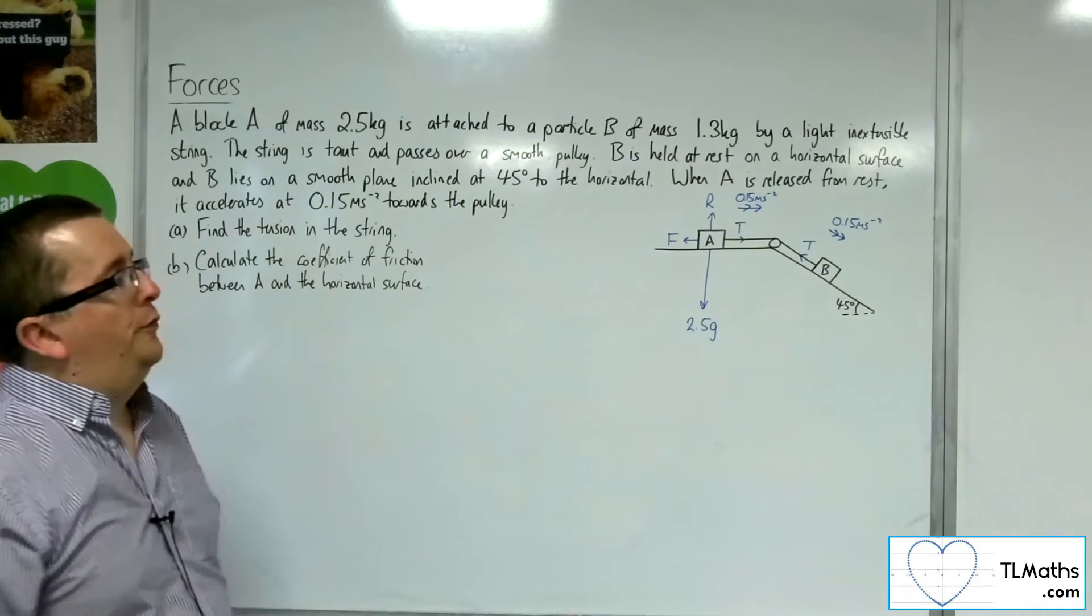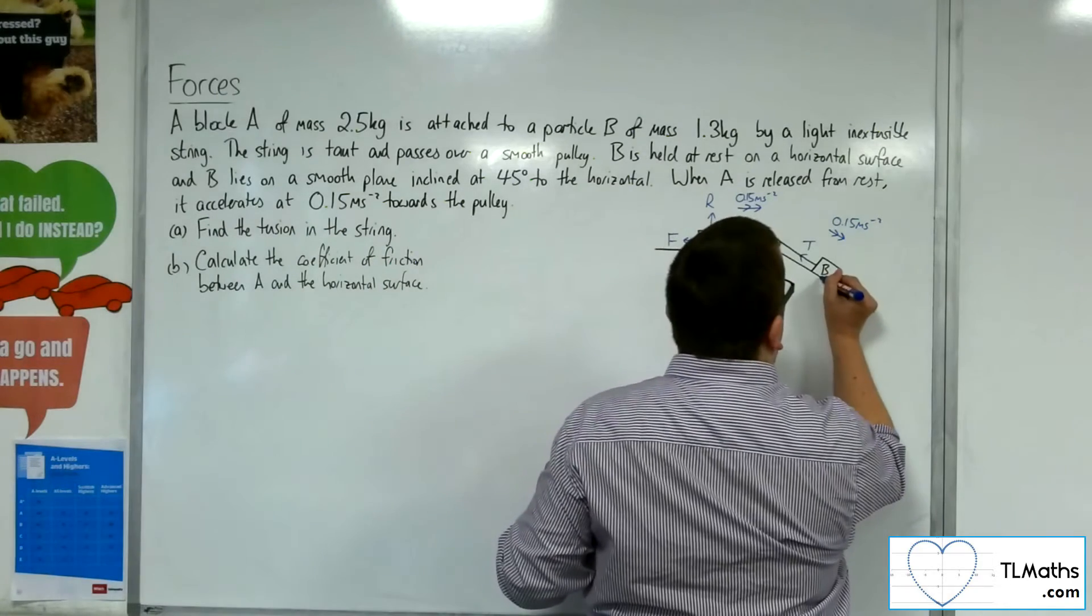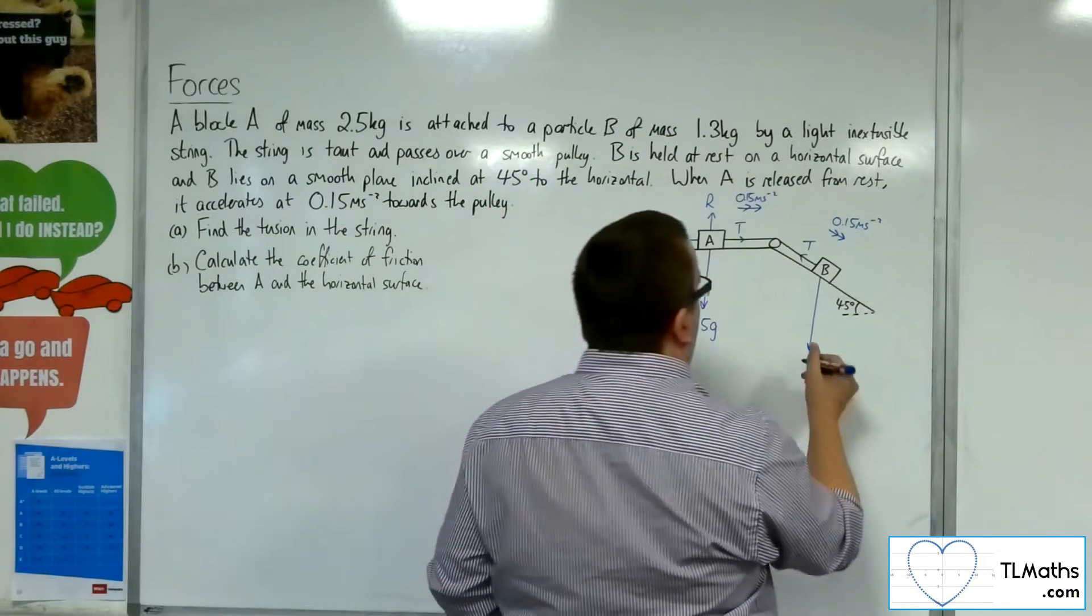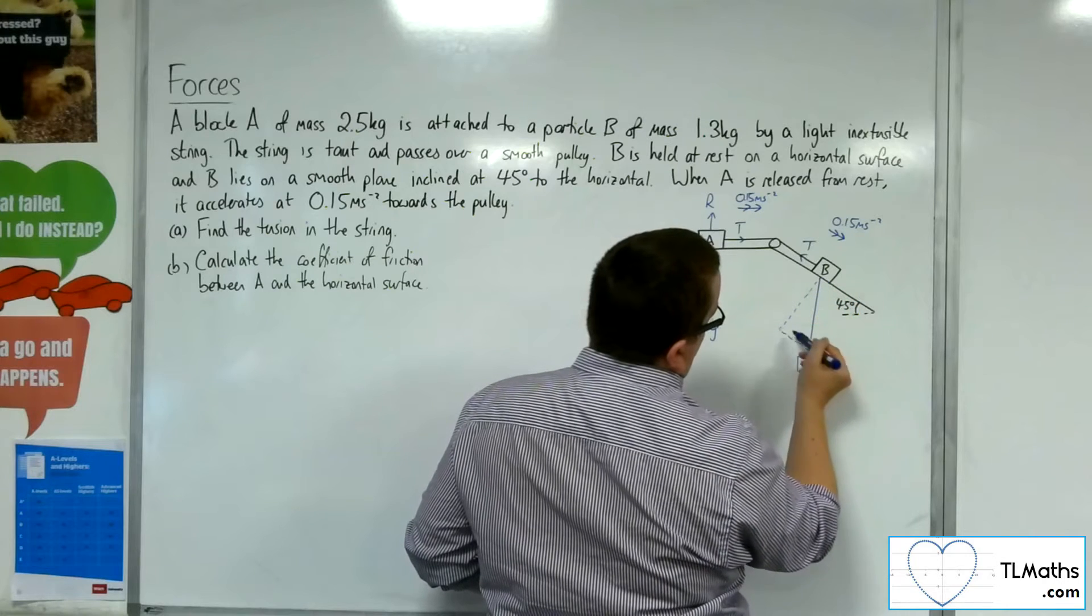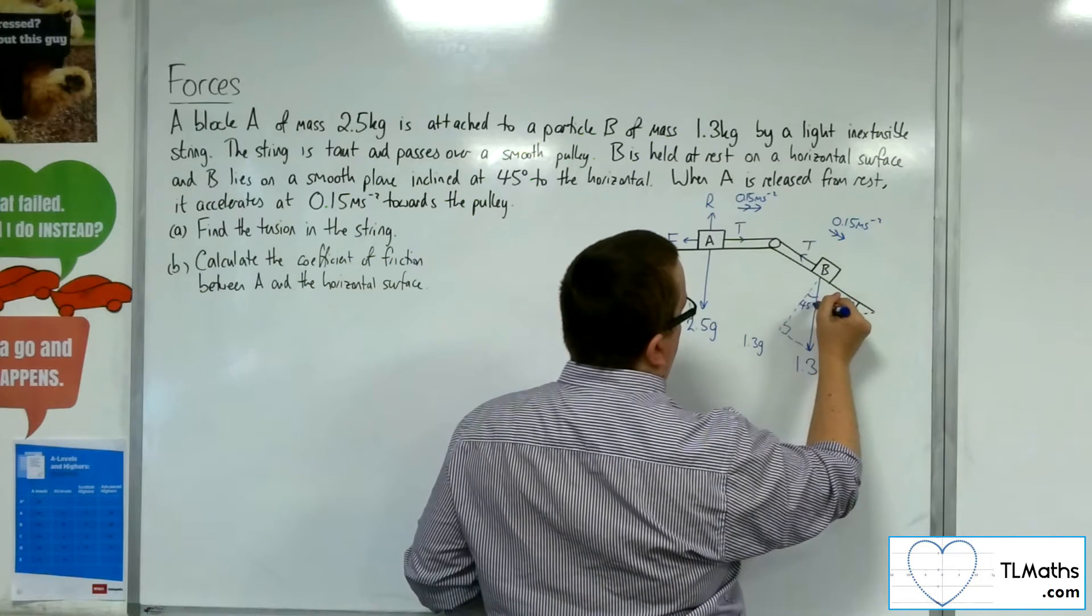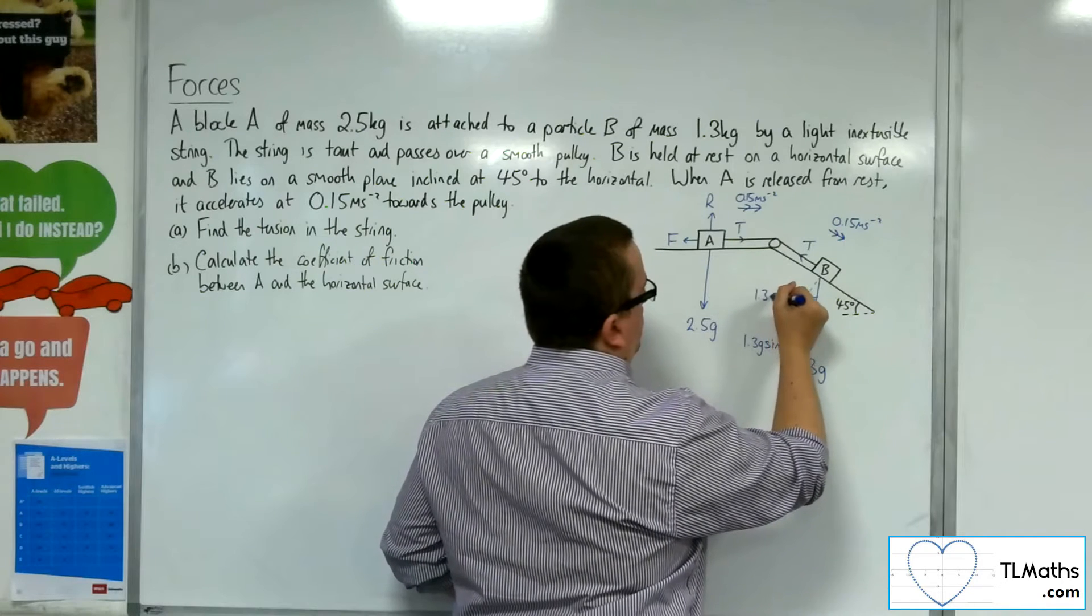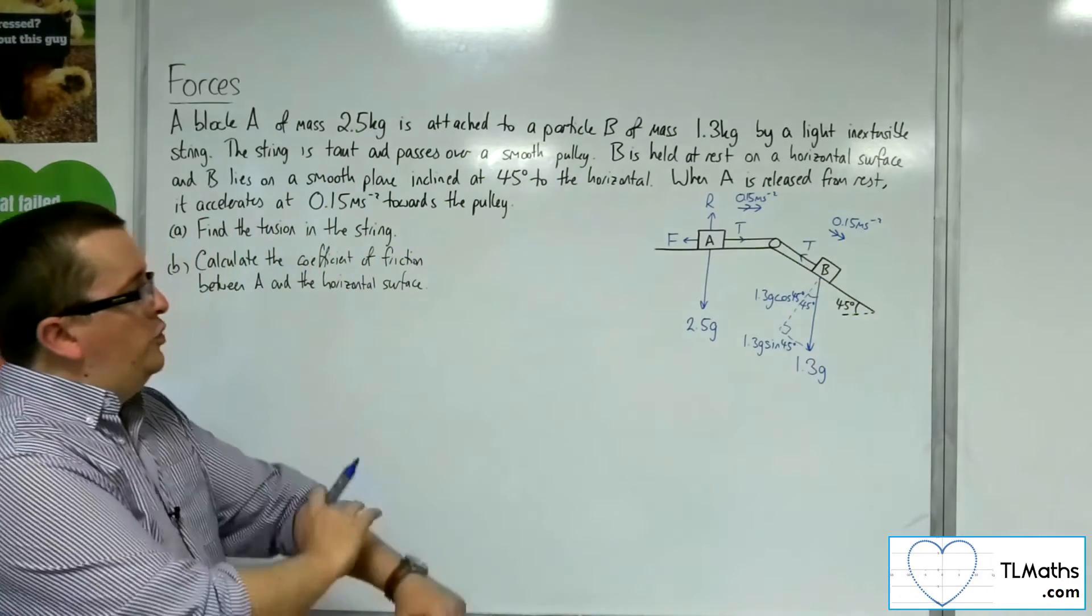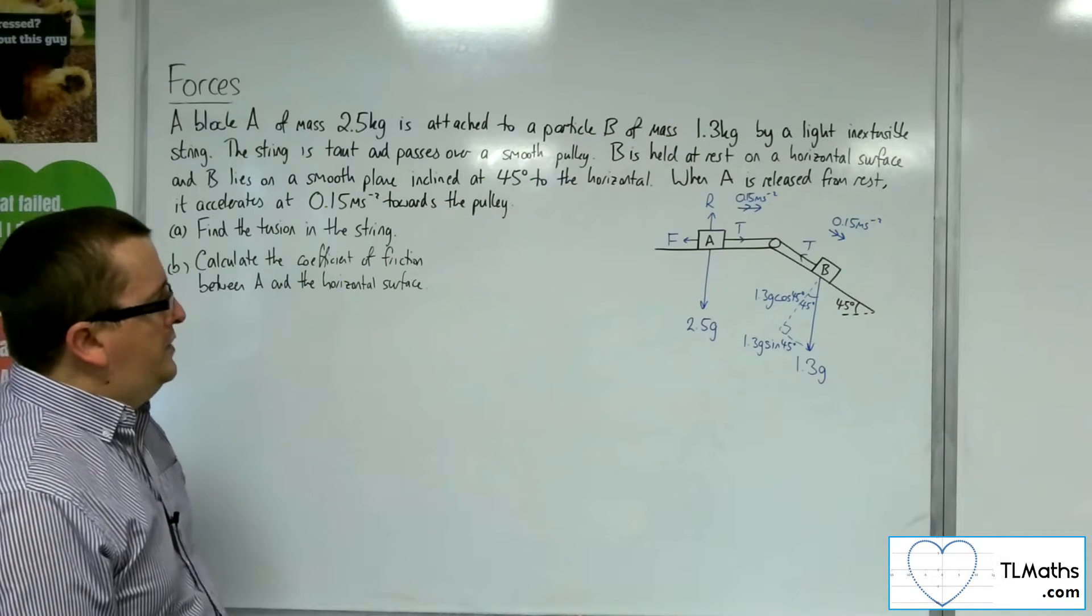There's no frictional force for B because we're told that the inclined plane is smooth. The weight for B works vertically downwards. B has a mass of 1.3 kilos, and so has a weight of 1.3 G. So that's 45 degrees, isn't it? So 1.3 G sine of 45 and 1.3 G cosine of 45 for the opposite and adjacent to that triangle. OK, so that's looking like it.